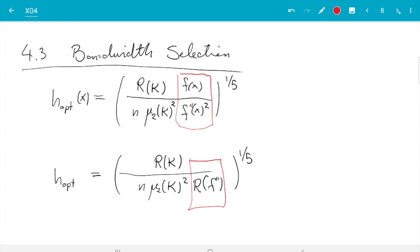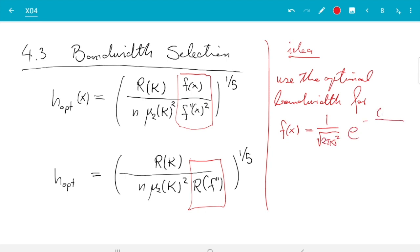Namely, one idea is: since we don't know f, assume that maybe f looks like a normal distribution. So use the optimal bandwidth for a different f, and since we don't know which one to use, we use the normal distribution. So that would be one over square root two pi sigma squared, e to the minus x minus mu squared over two sigma squared. And that will not be right, but if our function looks a bit like f, it will be hopefully close to right. That is one thing one could try.